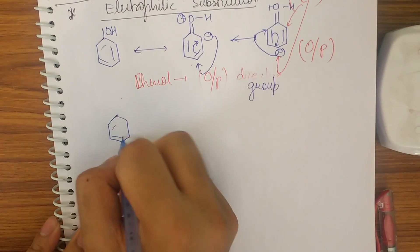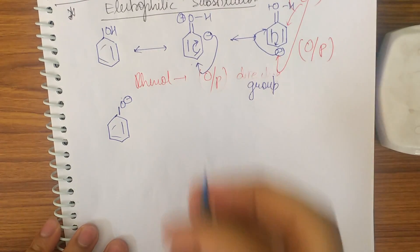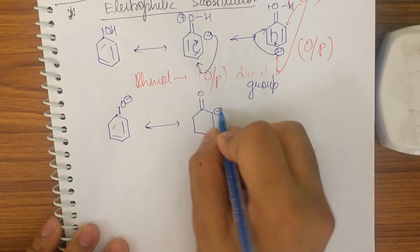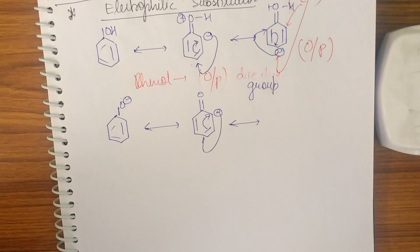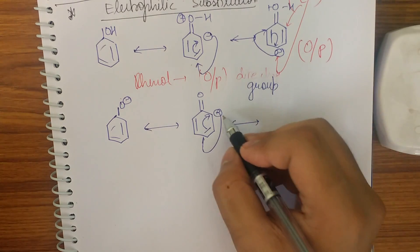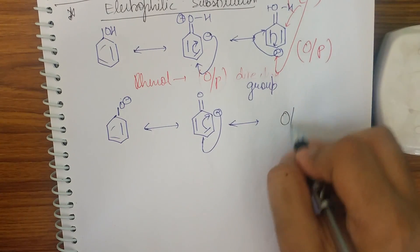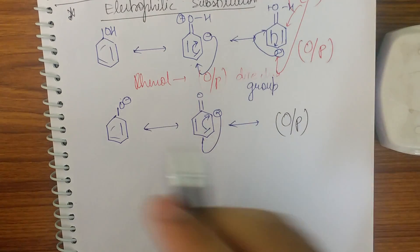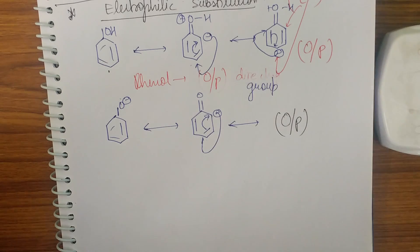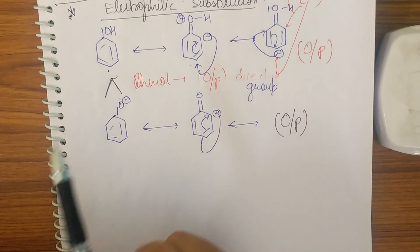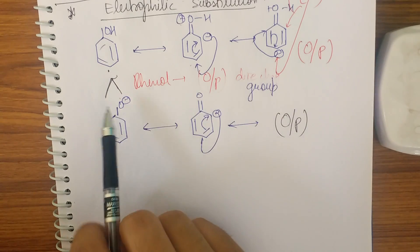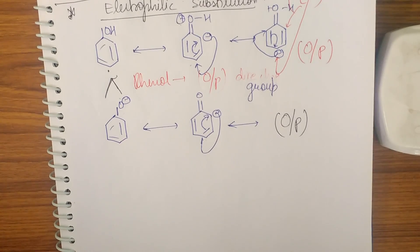For phenoxide (O⁻): drawing resonance structures similarly shows the negative charge going to ortho and para positions, so it is also an ortho/para director. Phenoxide is a stronger ortho/para director than phenol because phenol has charge separation (O⁺ and ring negative), which partially offsets the effect, whereas phenoxide has only a single negative charge delocalized freely over the ring.